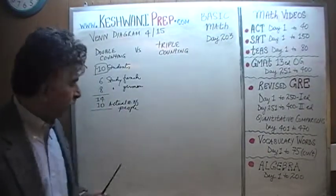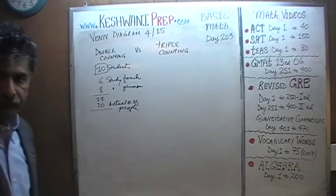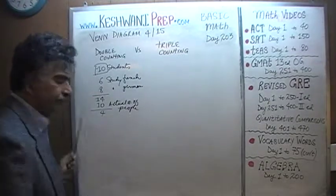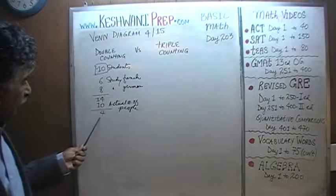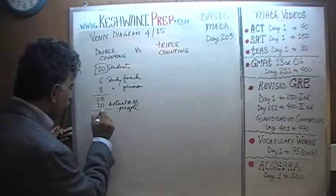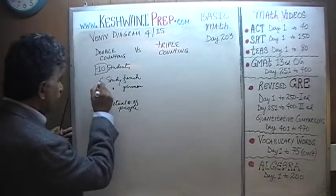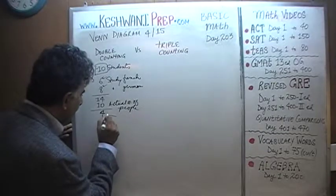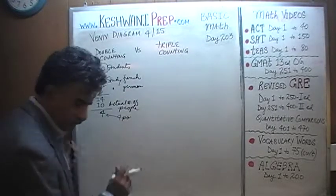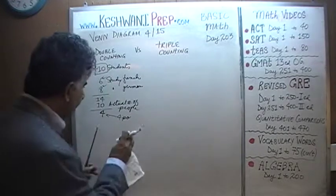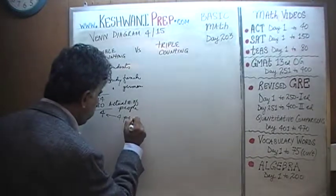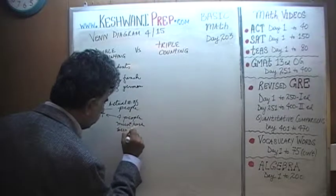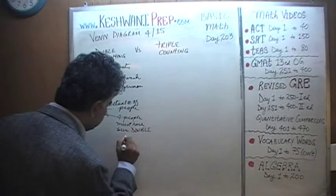But when we add up these two figures we get 14, and we only have 10 people. Where is this overflow of 4 coming from? This overflow of 4 comes because when we add up 6 and 8 we get 14, but there are only 10 people altogether in the group. So this overflow of 4 tells us that 4 people must have been double counted.